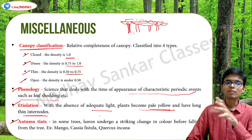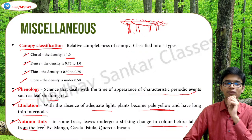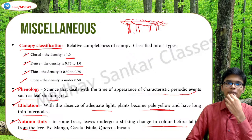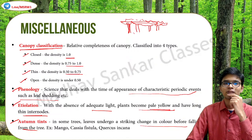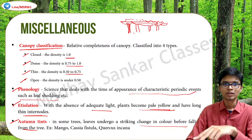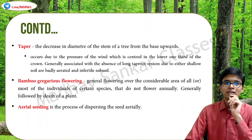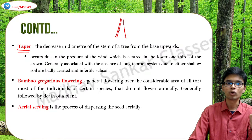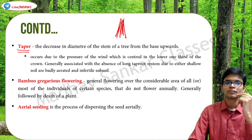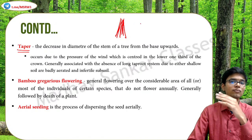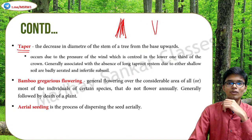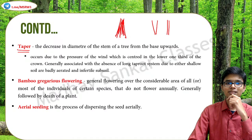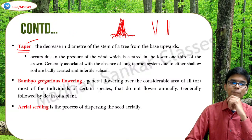Autumn tint - in some trees, leaves undergo a striking change in color before falling from the tree. Best example is the mango tree - before the leaf falls, it turns yellow. This color change before falling is known as autumn tint. Taper is an adaptation of a tree where the thickness of the trunk increases towards the base and tapers towards the top. This is an adaptation to prevent the tree from falling down during heavy winds - a tree that is wider at the base has much more stability.